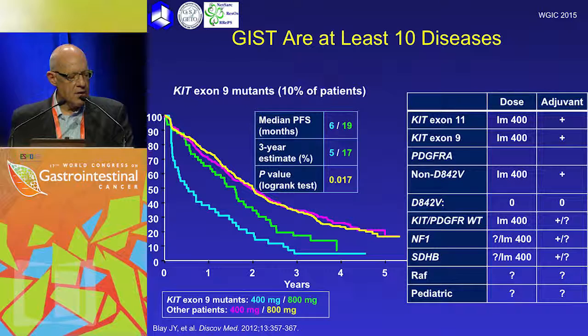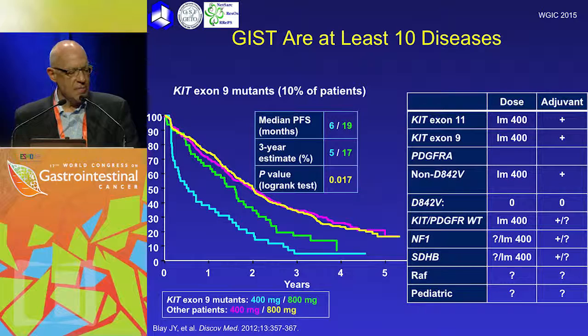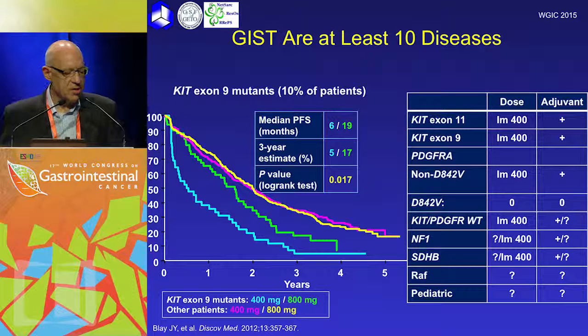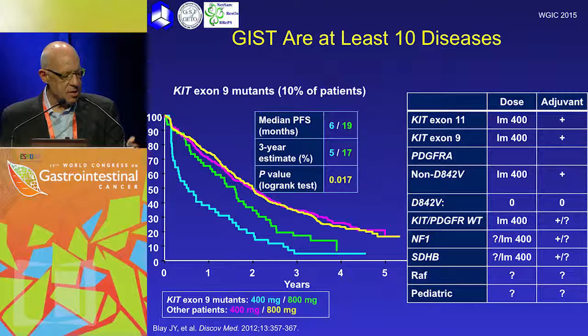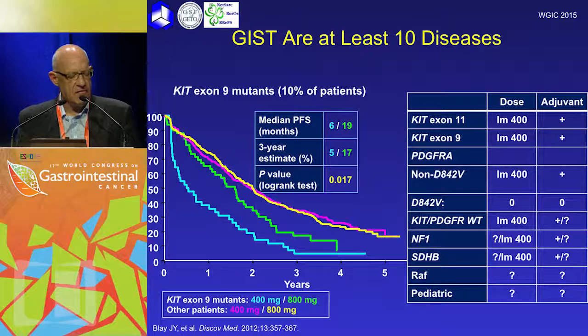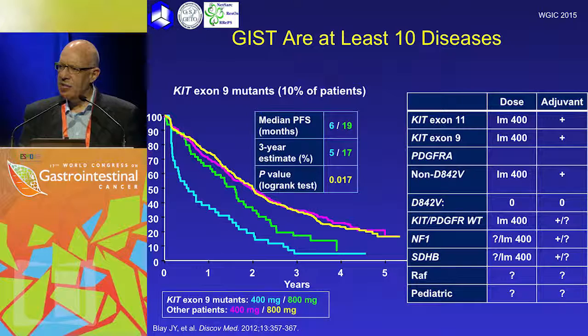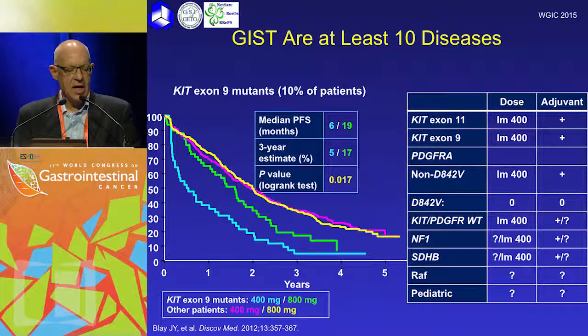Just to remind you that in the pivotal studies, the two doses of imatinib — 400 and 800 milligrams — showed a small but not significant benefit in PFS for the higher dose overall. However, when you look at the exon 9 group, there clearly is a difference in patients receiving the higher dose, with quite a big difference in PFS in favour of 800mg. This means patients with an exon 9 mutation and metastatic disease tend to be treated with a higher dose of imatinib, which also has implications in adjuvant therapy.